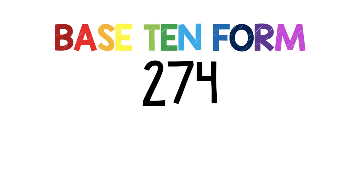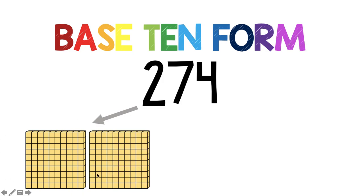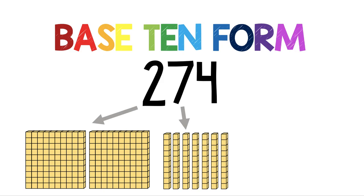Now we're going to look at base 10 form and do a similar thing. We know that the 2 is in the hundreds place, so we're going to use hundreds blocks to show this base 10 form, or picture form. We count 2 hundreds blocks to make 200. For 7, it's in the tens place, so we're going to use tens blocks — 7 tens blocks make 70.